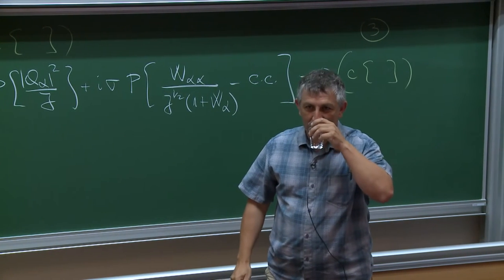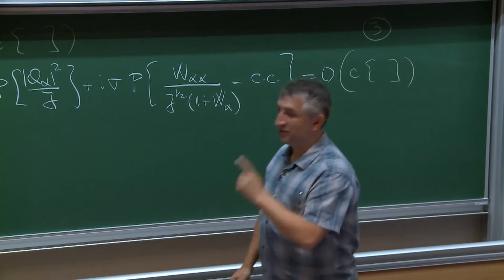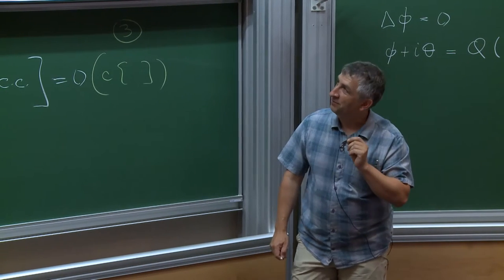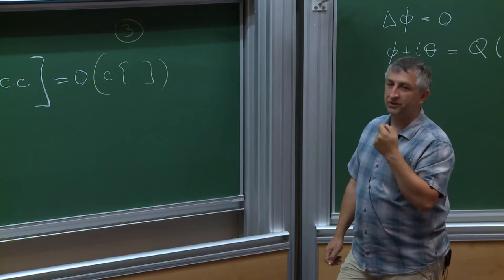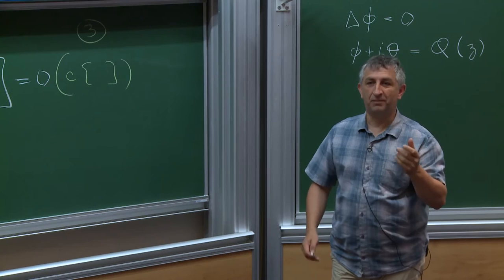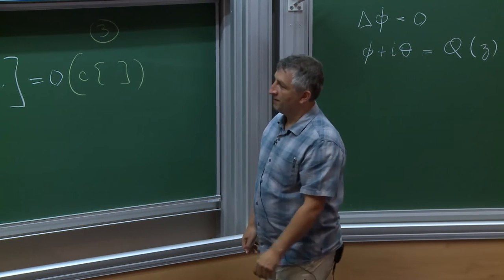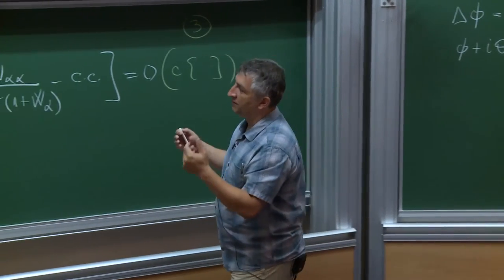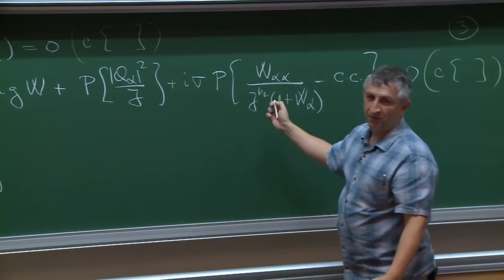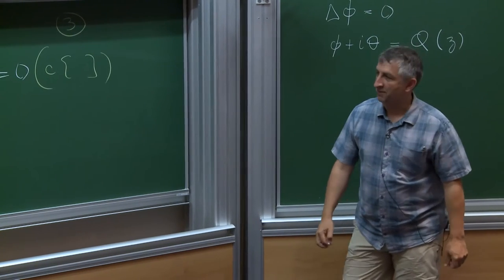The role of the Dirichlet-to-Neumann map in these equations is played by all the projectors you see — projectors times derivative is something very close to the Dirichlet-to-Neumann map. One thing that might be misleading: you might think this looks like a transport equation, but F is a holomorphic function — it's a projection and cannot be real (a real holomorphic function would have to be zero). So this is not a transport equation, not yet.